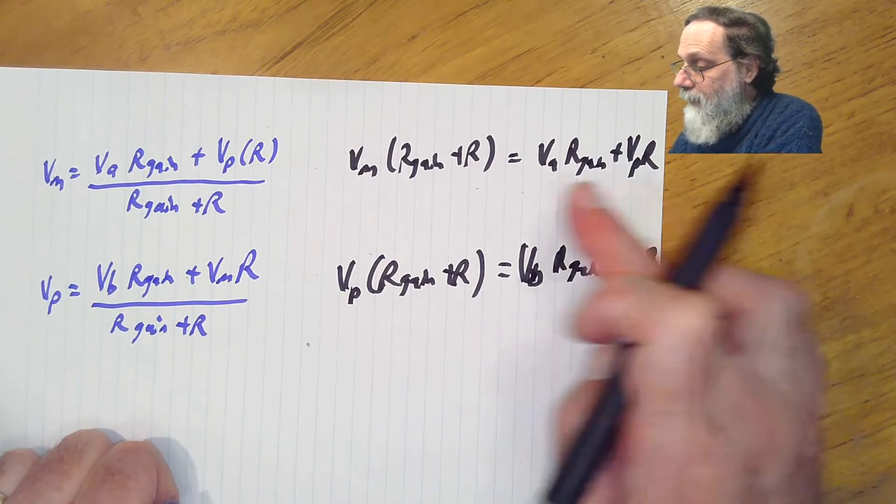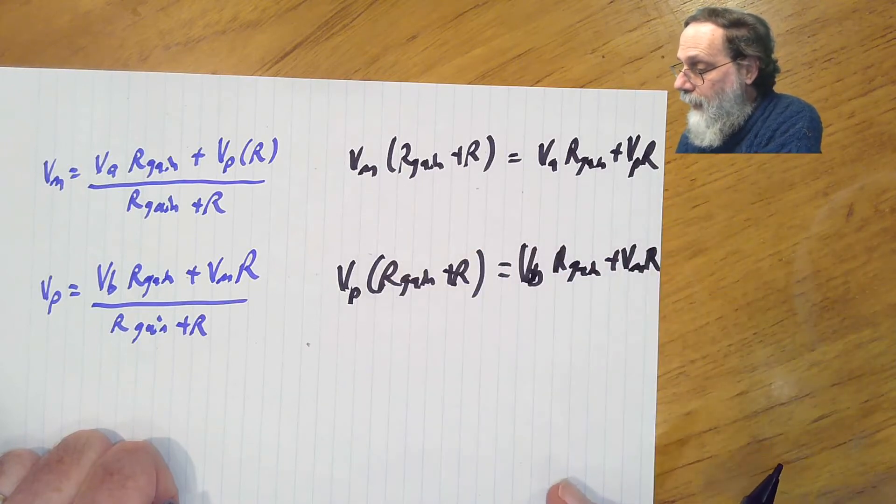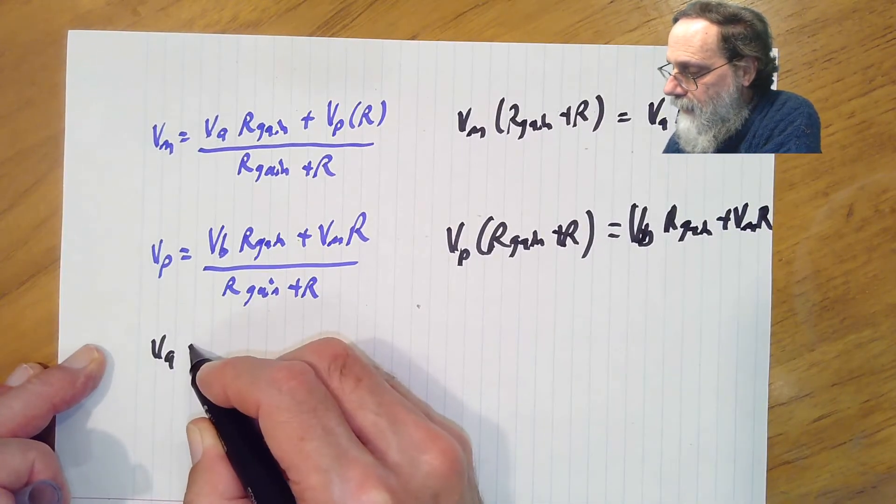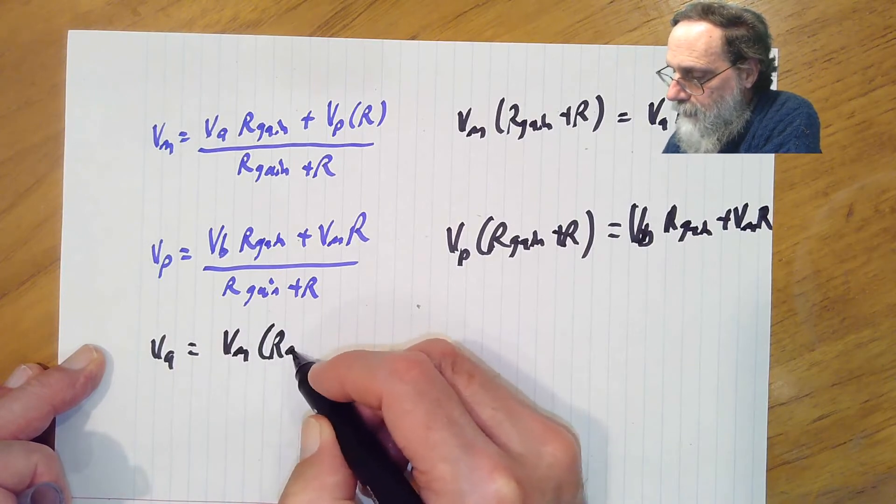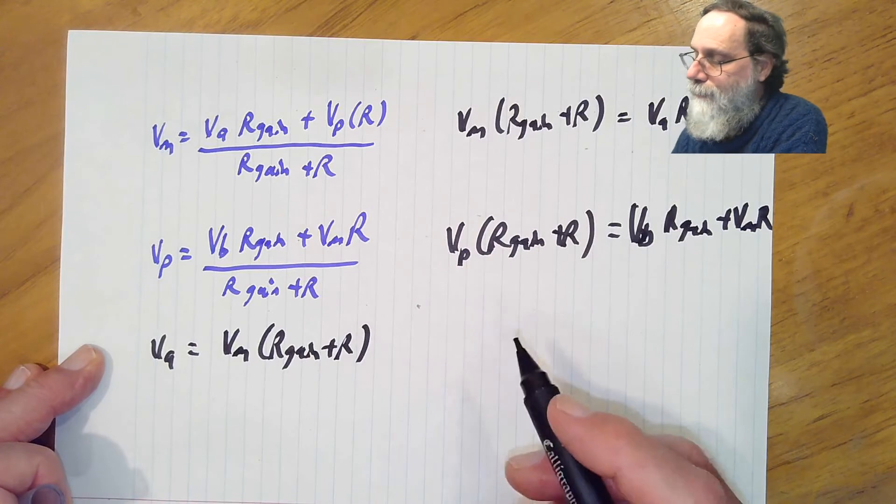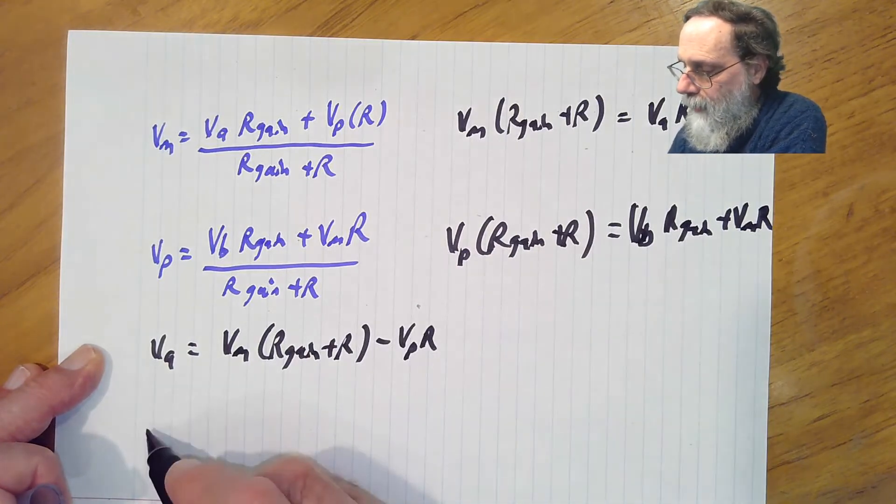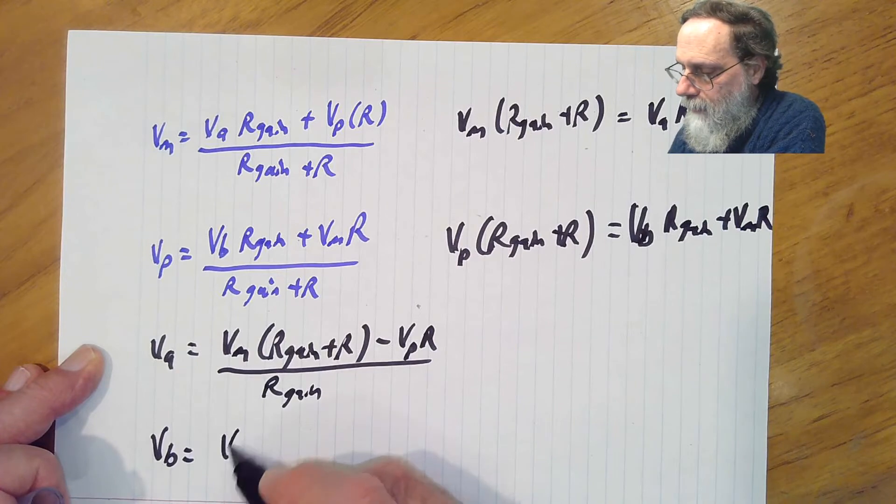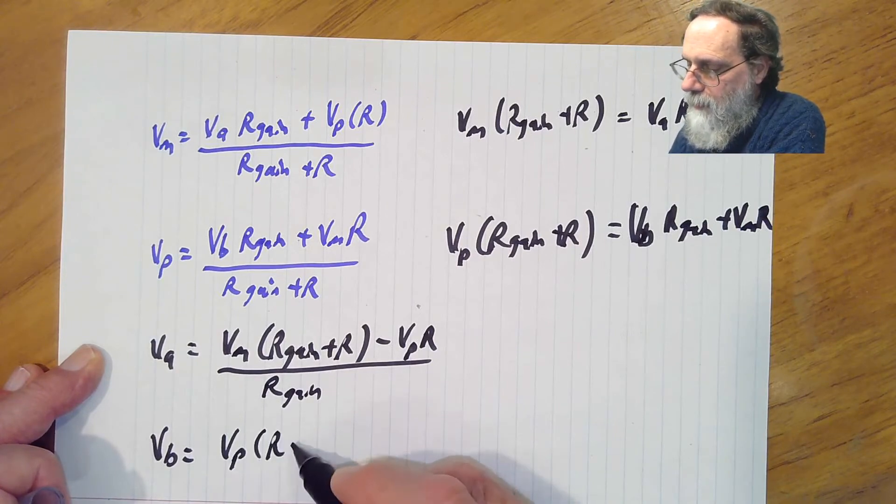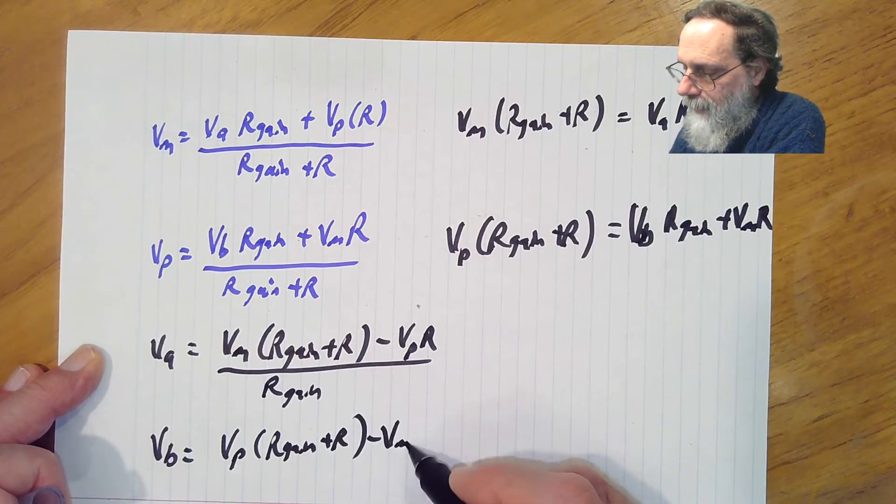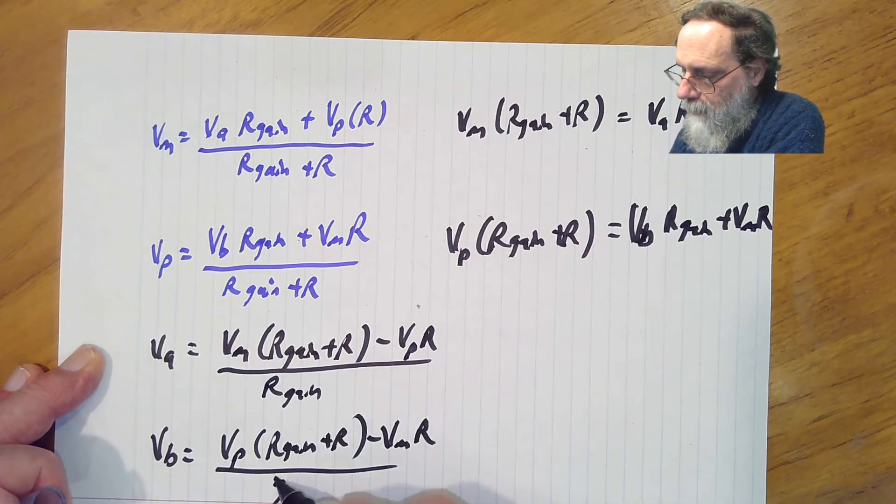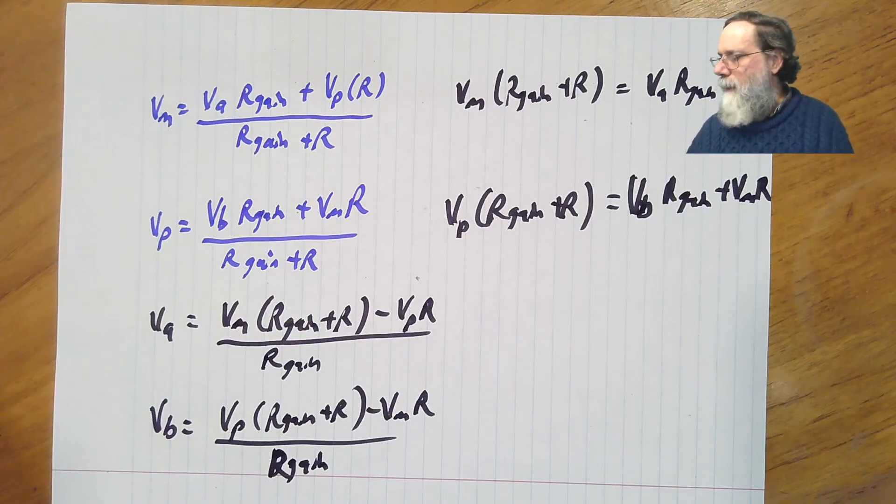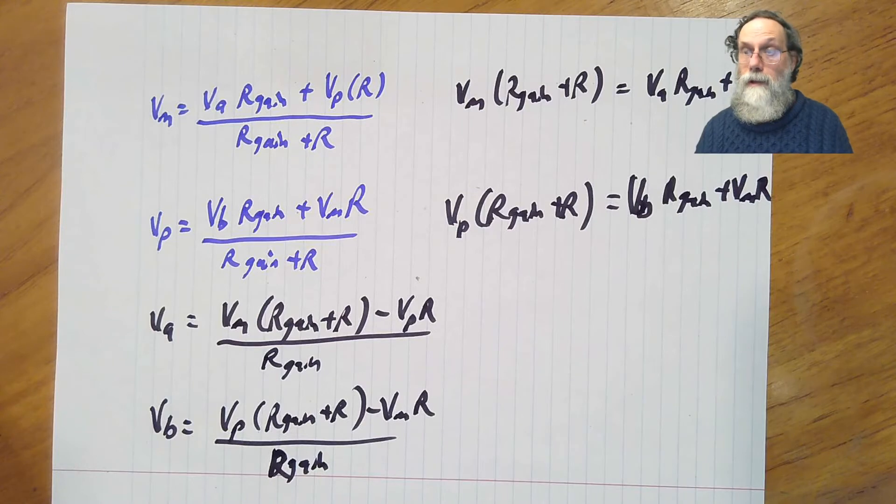Multiply both sides by R gain plus R, and get Vm times R gain plus R equals Va R gain plus Vp R, and Vp times R gain plus R is Vb R gain plus Vm R. Almost there. We can take the Vm and the Vp over to the other side, and divide by R gain. That'll give us Va equals Vm times R gain plus R minus Vp R over R gain, and Vb is Vp times R gain plus R minus Vm R over R gain. Looks kind of messy.